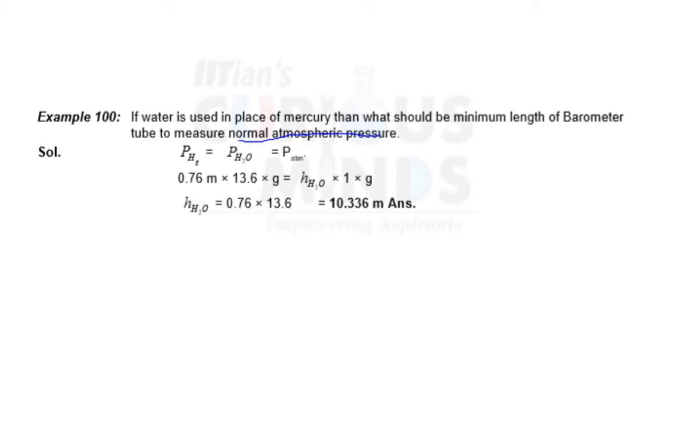So first of all, we should understand the concept of barometer. Barometer generally is 760 mm Hg, right? Because 760 mm Hg is normal atmospheric pressure which is 1 atm pressure. So what does it mean 760 mm Hg? It means barometer will be the tube...